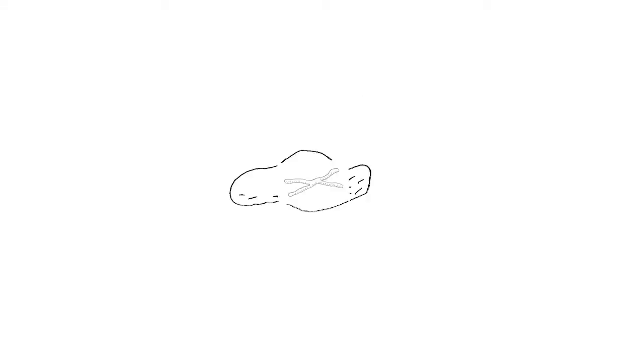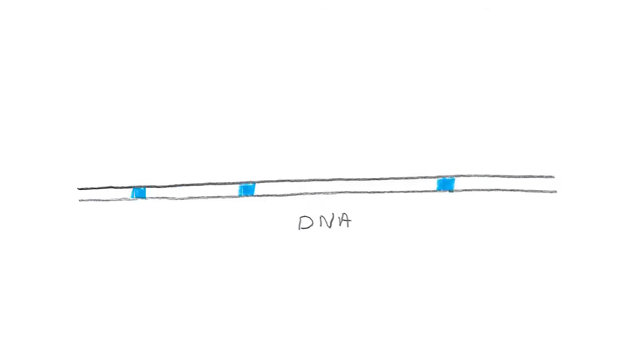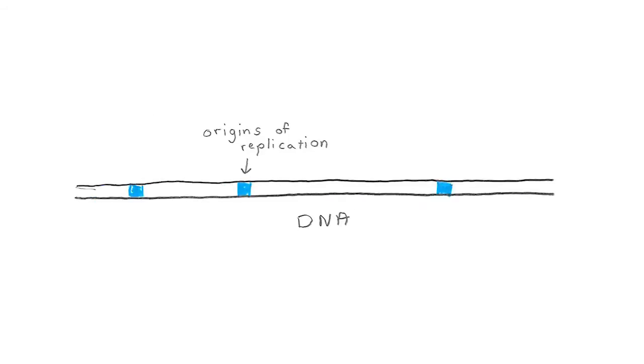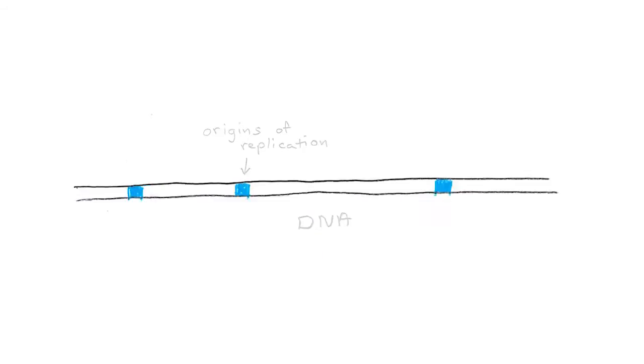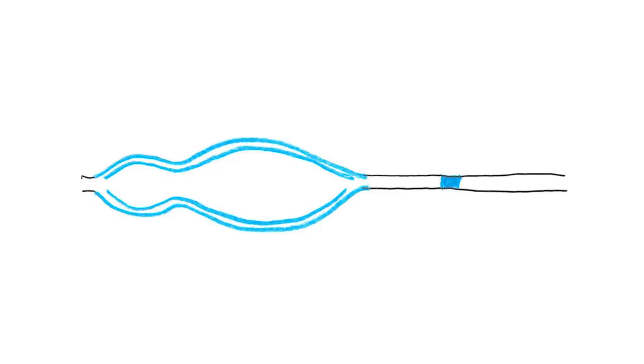One of the most basic things a cell needs to do is to replicate its genome when it divides into two cells. When we replicate our genomes, we don't just replicate chromosomes from one end to the other. Our cells start at many places in the middle of the chromosomes that are called origins of replication. The parts of the genome that are near an origin replicate early, and the parts that are far from an origin replicate late.